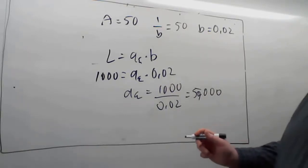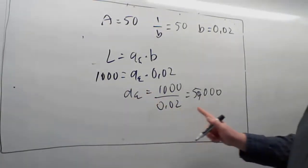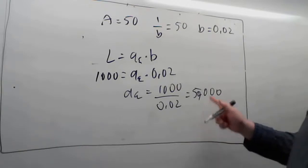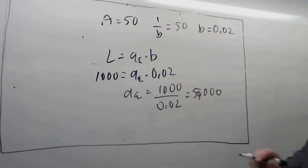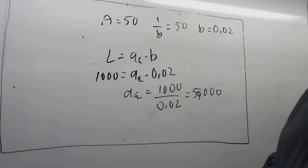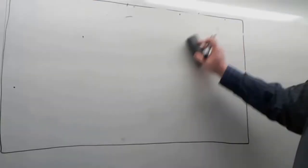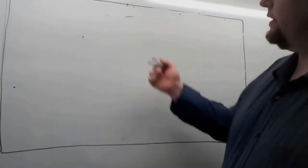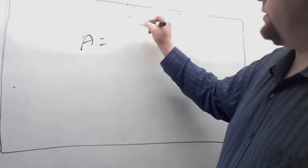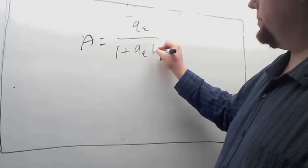Let's look at what the feedback network gain would have to be in actuality to get an exact gain of 50, compensating for the non-ideal effect. We have a system where L equals 1,000, meaning the open-loop gain is 50,000, and the closed-loop gain has to actually be 50. Going back to equation 1.40, our gain equals A_ε over (1 plus A_ε · B).